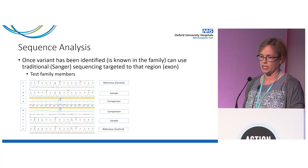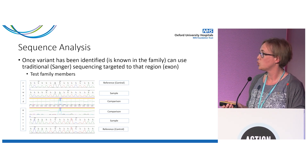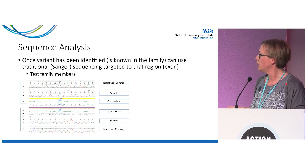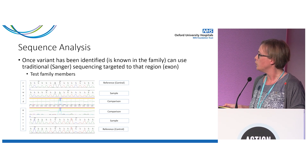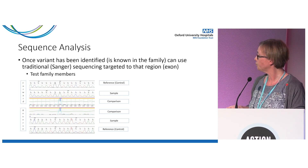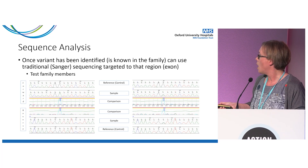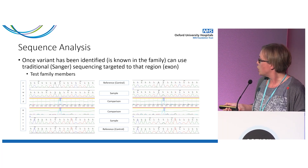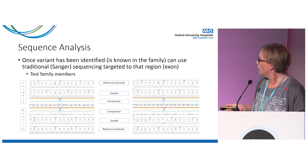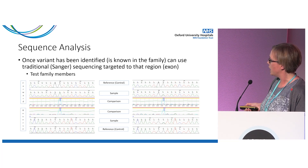When we do Sanger sequencing, we sequence both strands — in the forward and reverse directions — with the reference sequence shown at the top and the patient sample compared beneath. You can see a change in this male patient, and in his female relative the change is there too, but since she has both copies, you can see both an A and a G at that position.